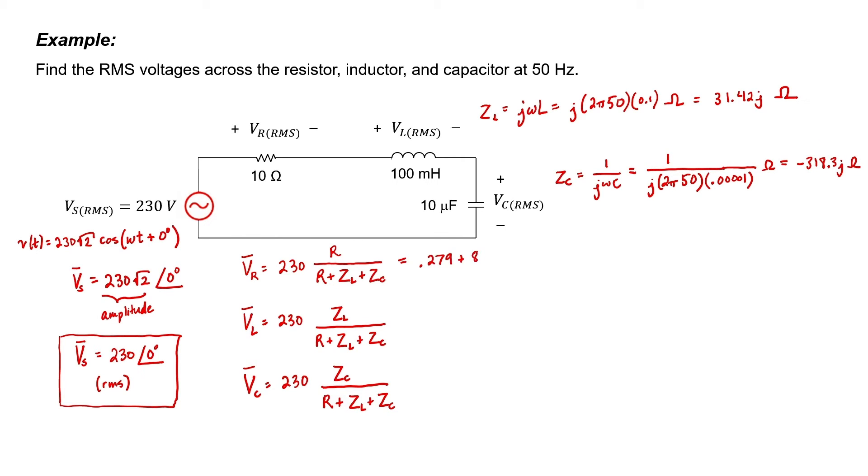That gives us enough information to find all of the complex voltages. I'm going to go ahead and convert these into polar form. The phase angles are somewhat meaningless in this problem because we're only interested in knowing the RMS voltages.